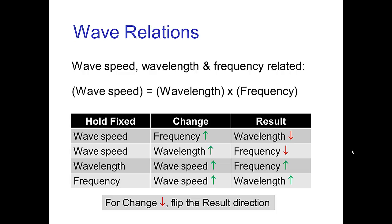As I said, the wave speed, wavelength, and frequency are related and the mathematical relationship is that the wave speed equals the product of wavelength times frequency. But this equation is less important than the consequences of this equation which are how do wave speed, wavelength, and frequency vary if we change one of those three.